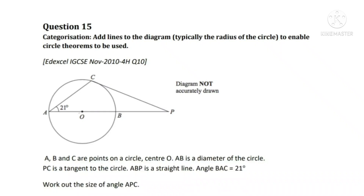Today in this video we will see a few problems on circle theorems. The hint given is to add lines to the diagram to enable circle theorems to be used. A, B and C are points on the circle with centre O. AB is the diameter of the circle and PC is the tangent to the circle. ABP is a straight line.